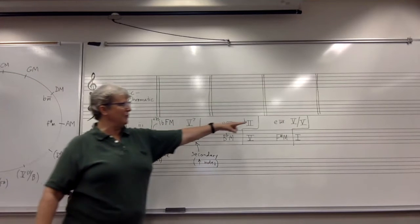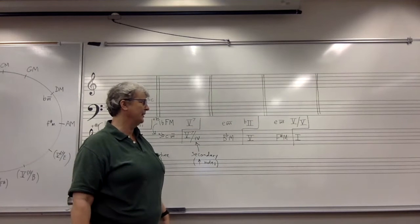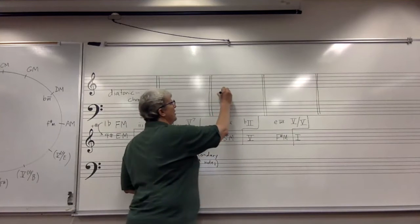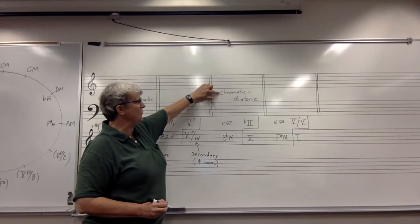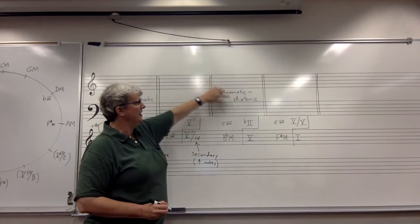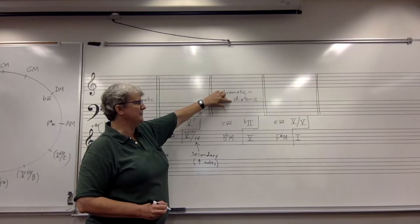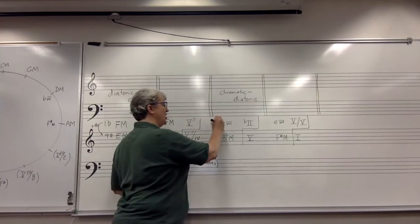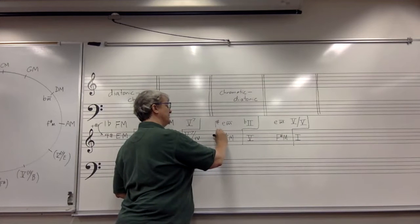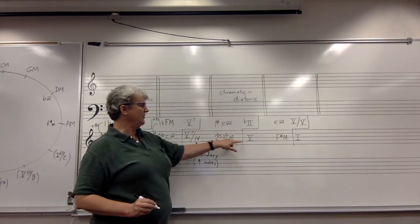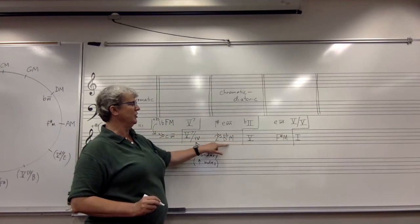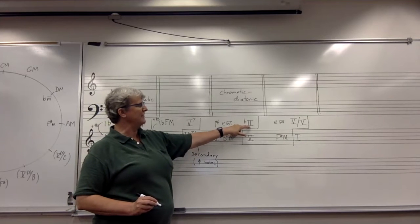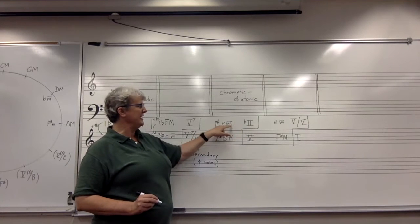There are two more examples on the right end of the board, and these illustrate chromatic-diatonic modulations. In other words, the pivot chord is going to be a chromatic chord in the first key and a diatonic chord in the second key. E minor is a key with one sharp, and B flat major is a key with two flats. If we want a chord which is diatonic in B flat major — a key with flats — we're going to have to move to the flat side of E minor, meaning we're going to have to use a mode mixture chord in E minor.